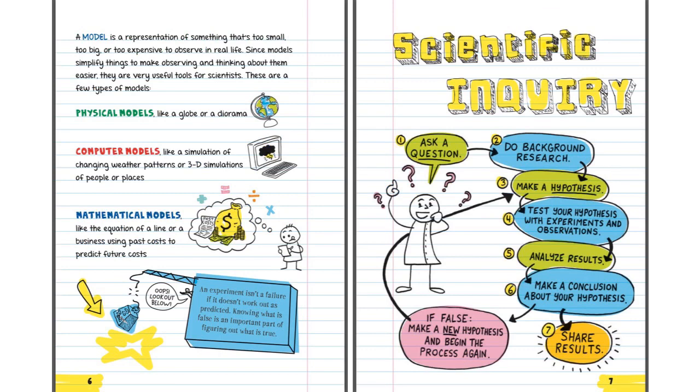A model is a representation of something that's too small, too big, or too expensive to observe in real life. Since models simplify things to make observing and thinking about them easier, they are very useful tools for scientists. These are a few types of models: Physical models, like a globe or diorama. Computer models, like a simulation of changing weather patterns or 3D simulations of people or places. Mathematical models, like the equation of a line or a business using past costs to predict future costs.